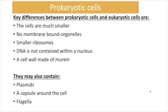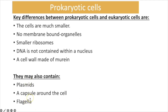Prokaryotic cells differ from eukaryotic cells in several key ways: they are much smaller, have no membrane-bound organelles, have smaller 70S ribosomes, have circular DNA not contained within a nucleus and not bound to histone proteins, and have cell walls made of murein rather than cellulose or chitin. Some prokaryotic cells also contain plasmids, a capsule, and a flagellum, but not all have these three.